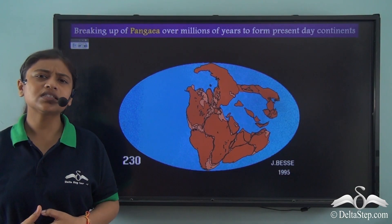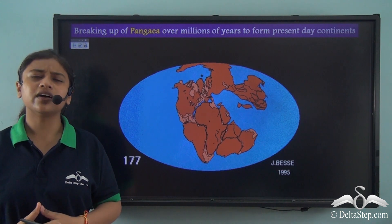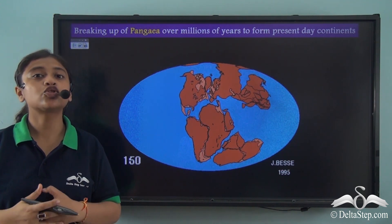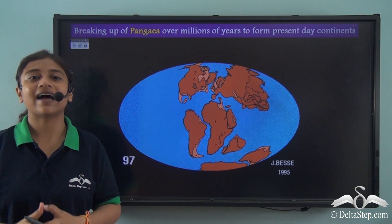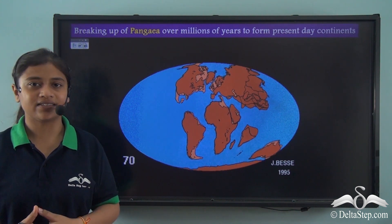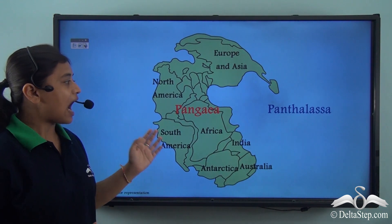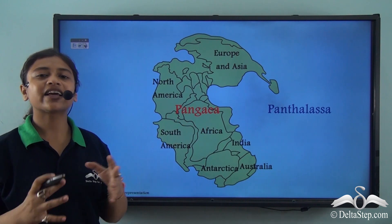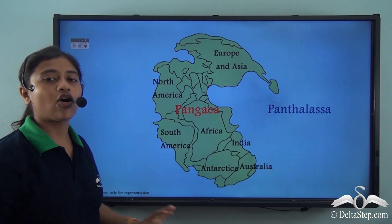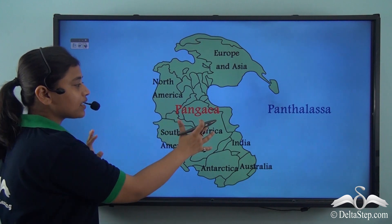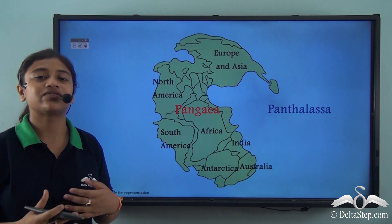So how did this continent come into existence? As we have already studied in our previous lessons, millions of years ago there was a supercontinent named Pangaea. After the breaking down of Pangaea into different land masses, the continents came into existence. We can see in the picture how Pangaea is like a jigsaw puzzle in which all the continents are stuck together, while there is a superocean called Panthalassa. When Pangaea started breaking up into smaller fragments of land mass, it eventually led to the continents that we see today.